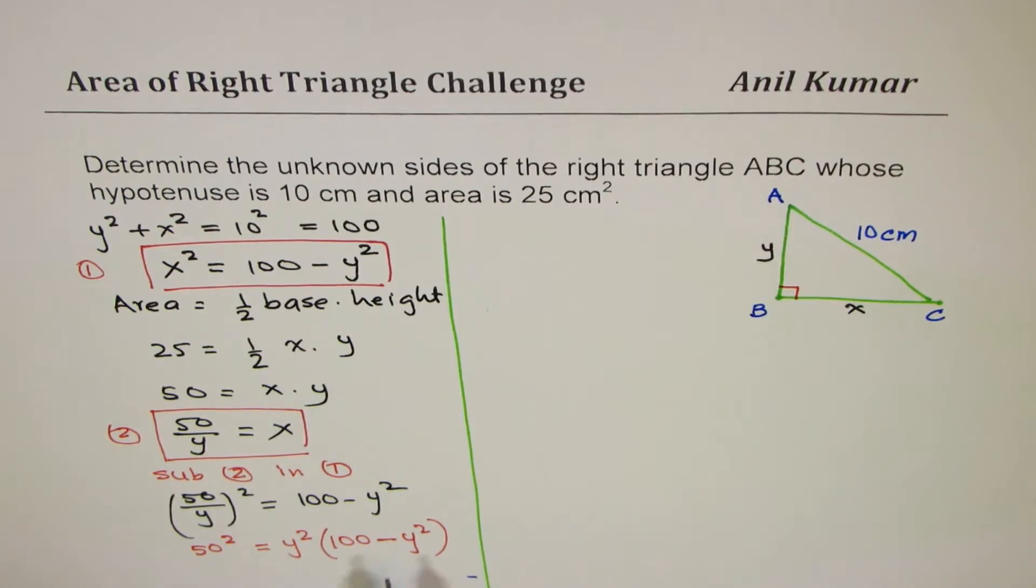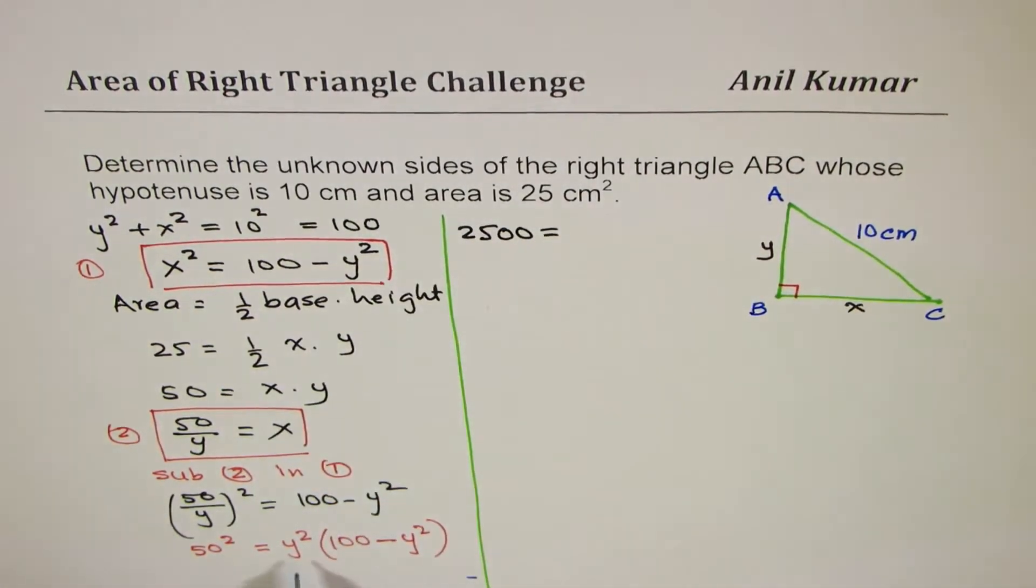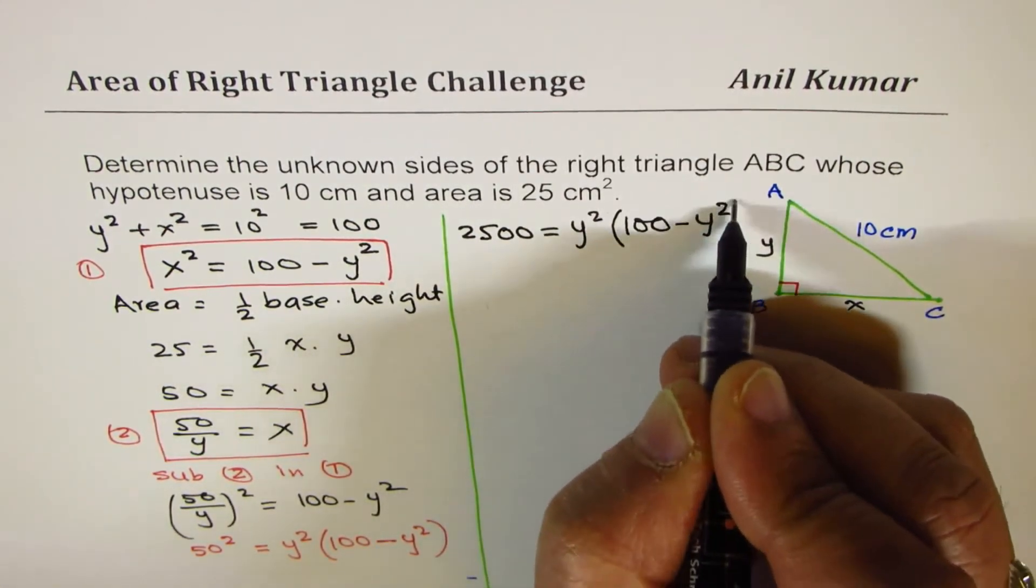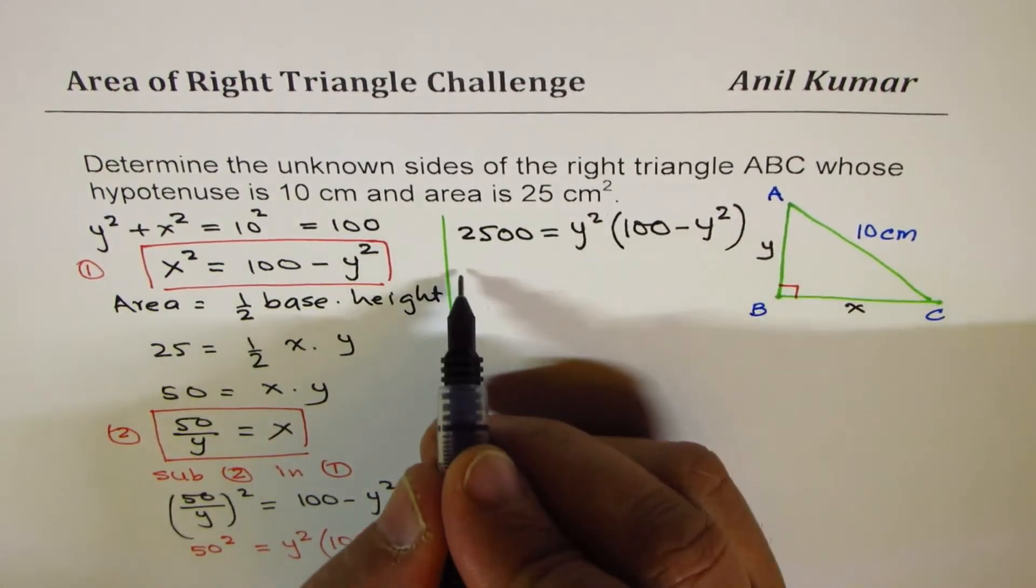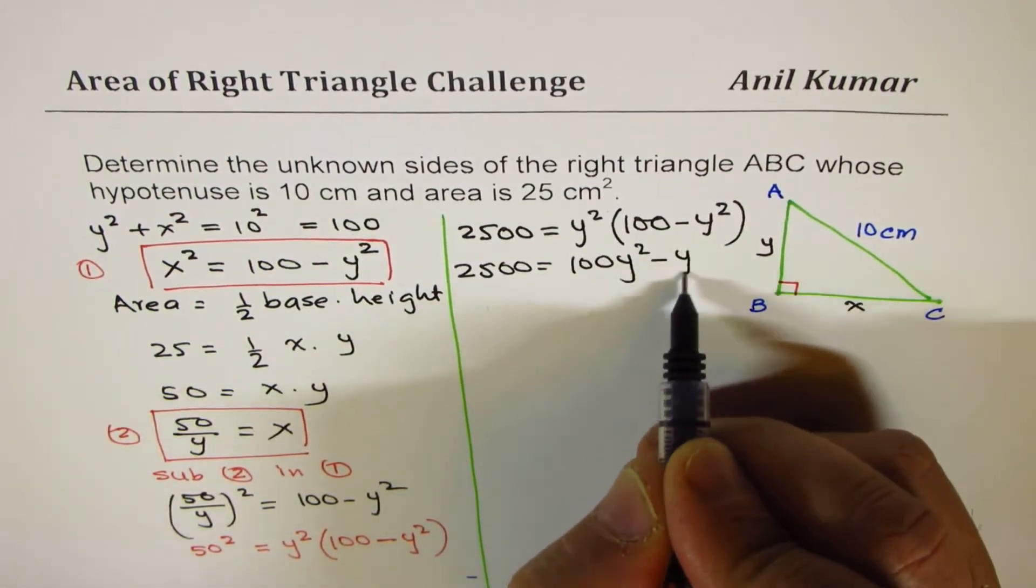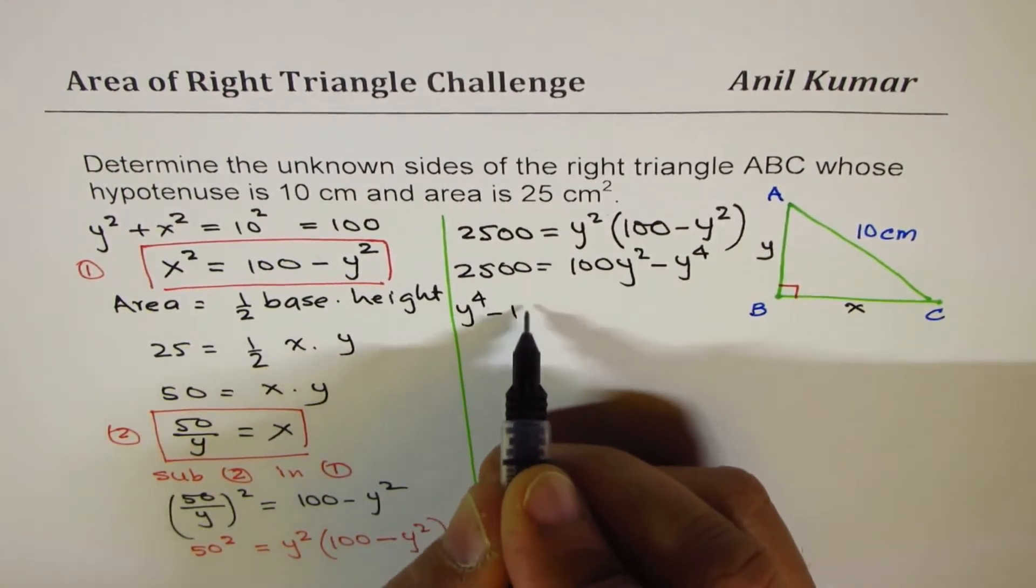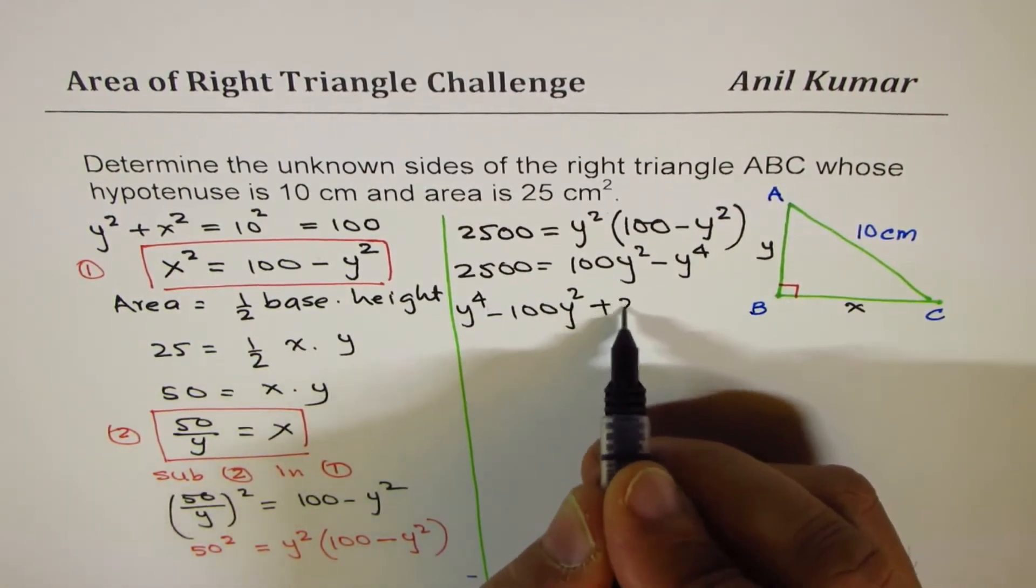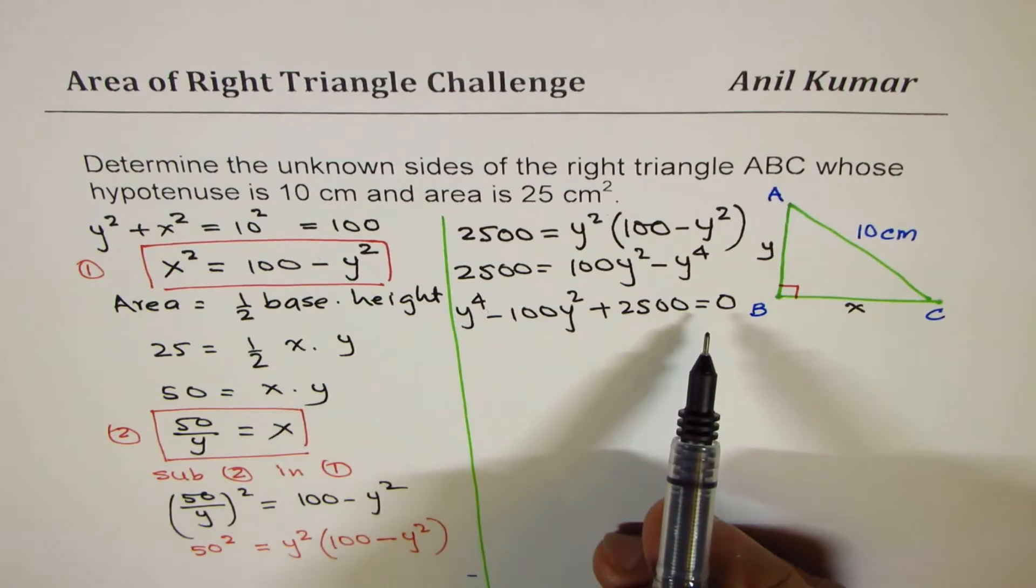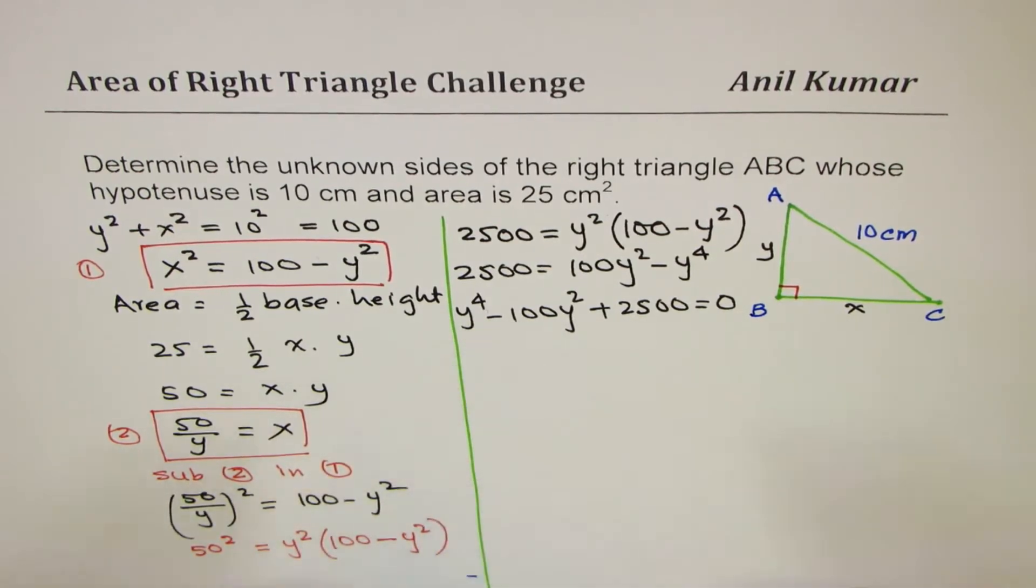So we'll begin with this on the right side. So we have 50 square which is 2500 equals to Y square times 100 minus Y square. So that is 2500 equals to 100 Y square minus Y to the power of 4. We can bring all these terms to one side. So we get Y to the power of 4 minus 100 Y square plus 2500 equals to 0. Now you could treat this as a quadratic equation with Y square. And we can now apply quadratic formula to solve this equation.